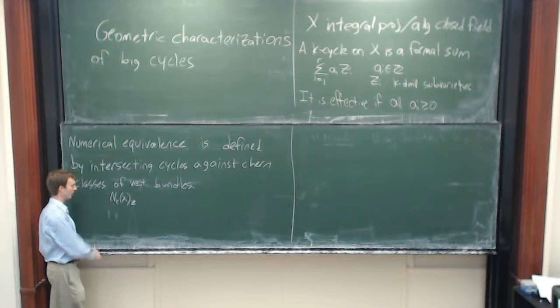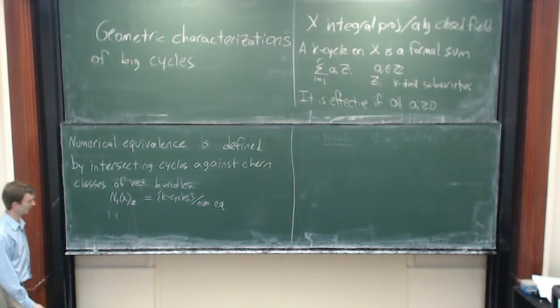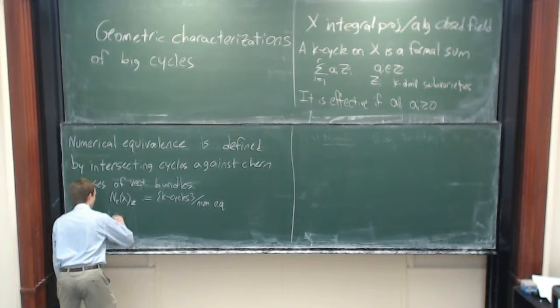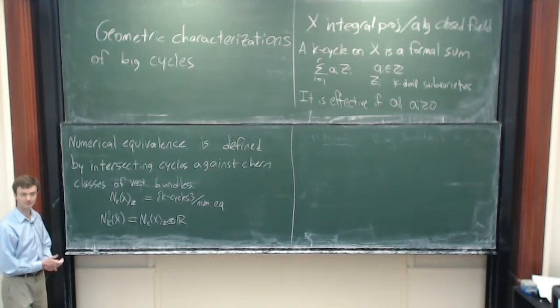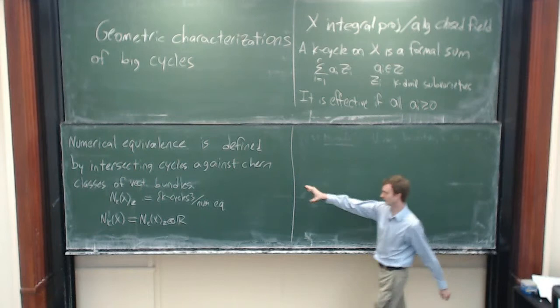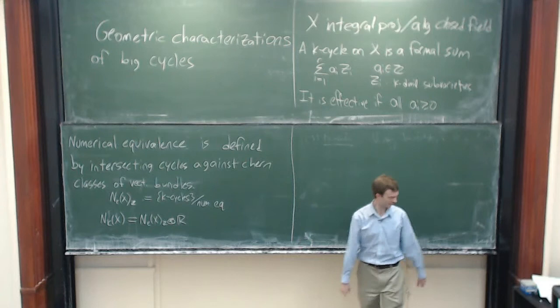I'm going to call N_k(X, Z) the set of k-cycles up to numerical equivalence. This turns out to be a finitely generated free abelian group, and therefore it's a lattice inside of N_k(X), which is defined to be N_k(X, Z) tensored up to R. We want real coefficients for doing analysis. You won't lose much if you think of this as the subspace of singular homology spanned by classes of cycles.